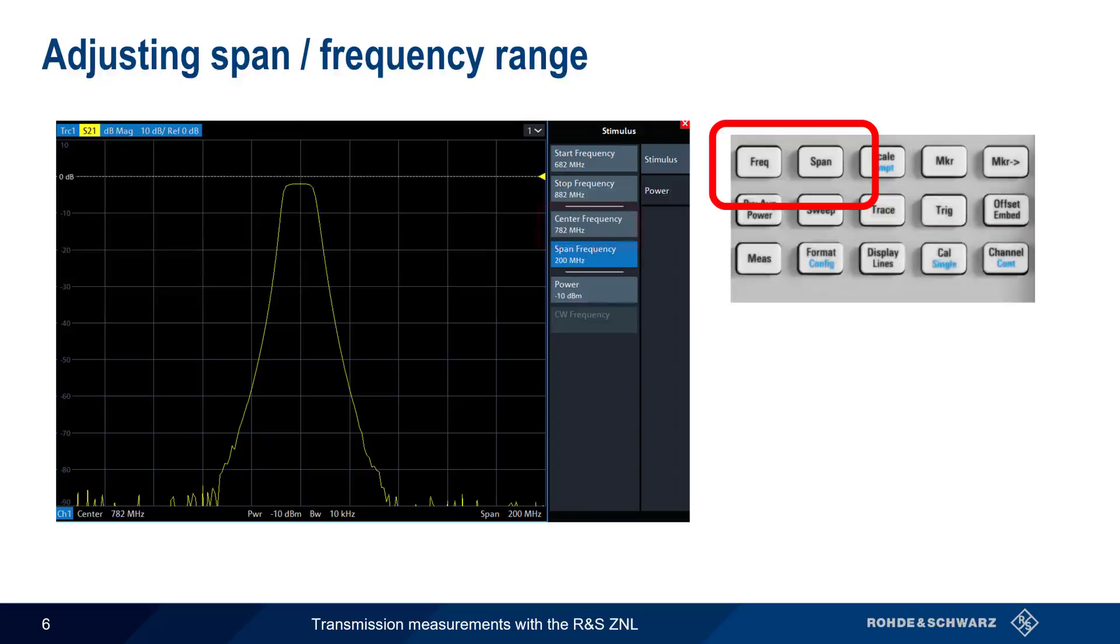For example, we've moved the center frequency to 782 MHz and adjusted the span to 200 MHz, in order to better see the shape of our device under test, here a bandpass filter.